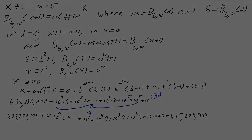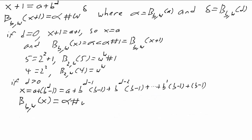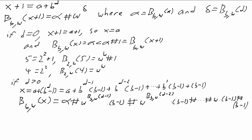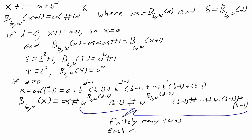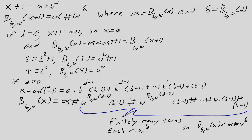So when we convert x to an ordinal, b_{b,omega}(x) is alpha + omega^(b_{b,omega}(d-1))·(b-1) + omega^(b_{b,omega}(d-2))·(b-1) + ... and so on. But by the inductive hypothesis, all these pieces — b_{b,omega}(d-1), etc. — are all less than b_{b,omega}(d). So no matter how many times we add together omega^(b_{b,omega}(d-1)), they add to something less than omega^(b_{b,omega}(d)). In particular, b_{b,omega}(x) is alpha plus finitely many terms less than omega^(b_{b,omega}(d)), so b_{b,omega}(x) < alpha + omega^(b_{b,omega}(d)) = b_{b,omega}(x + 1). That completes the proof of the lemma: for every x, b_{b,omega}(x) < b_{b,omega}(x + 1).